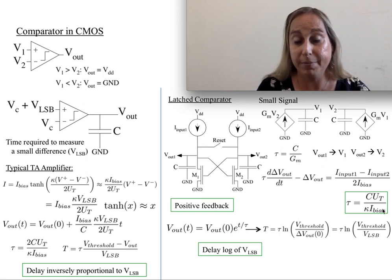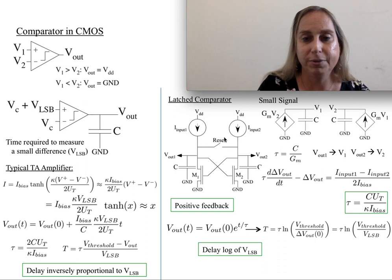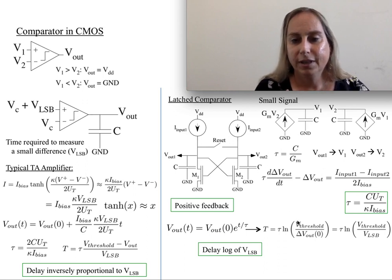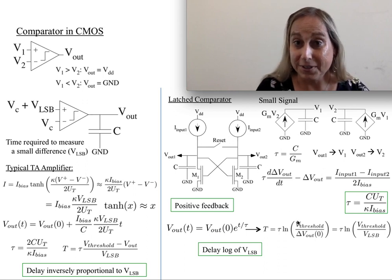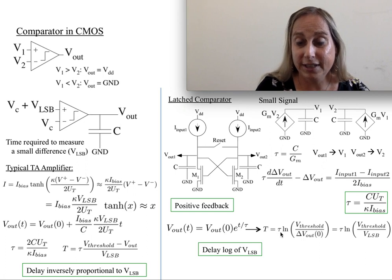The solution for these gives me an e to the t over tau kind of response. And that tau is CUT over kappa I bias, so I still have control over it. I bias here is kind of the average of these two input currents. But here's the interesting thing.